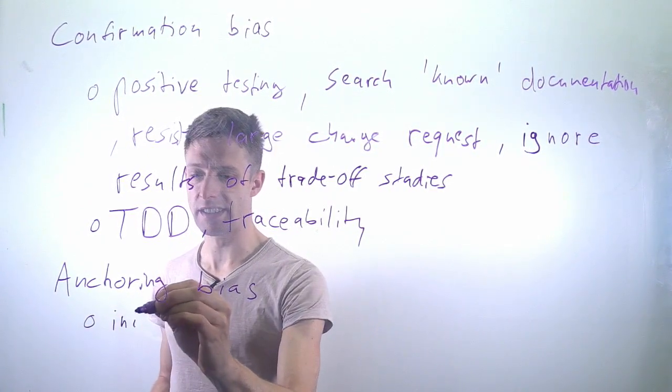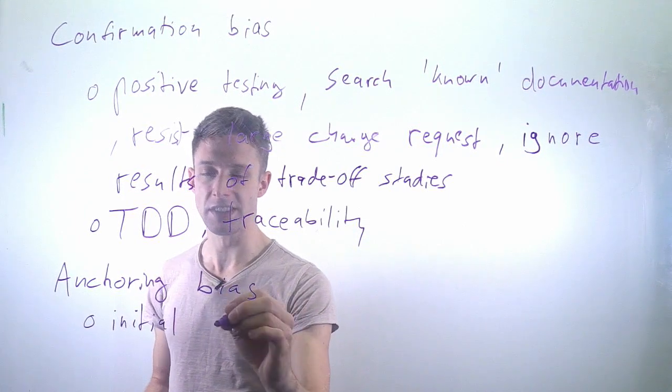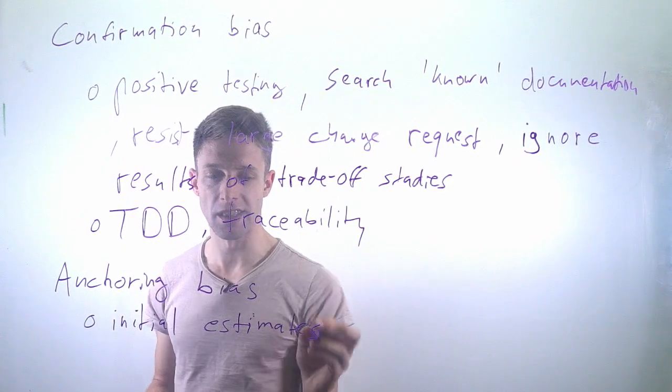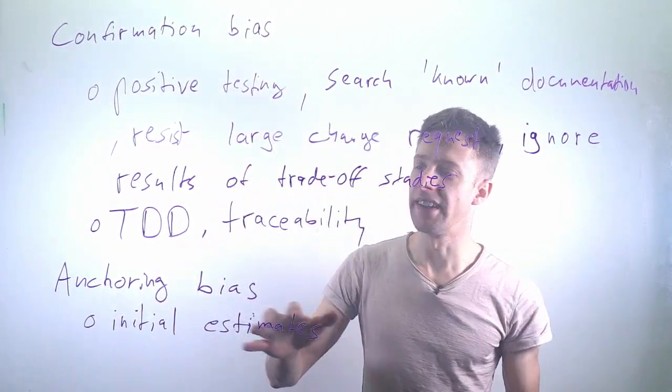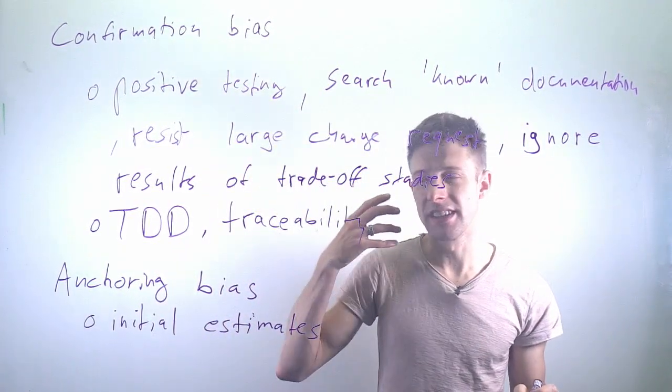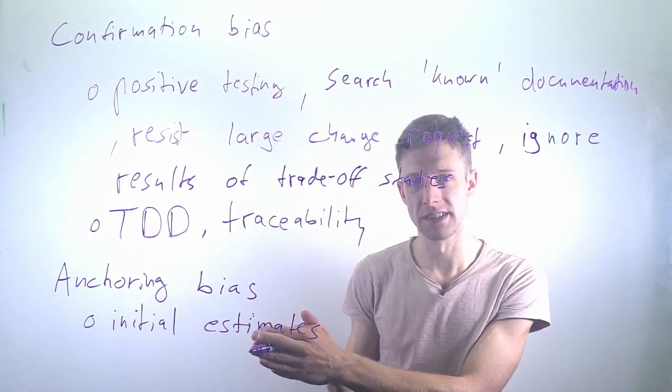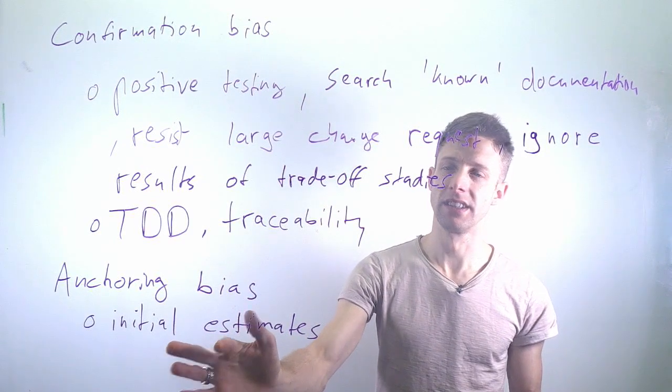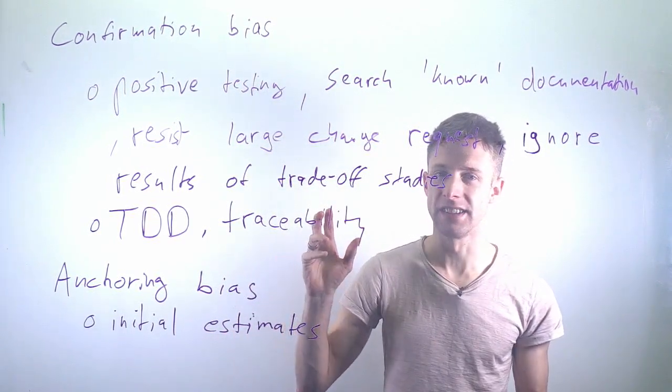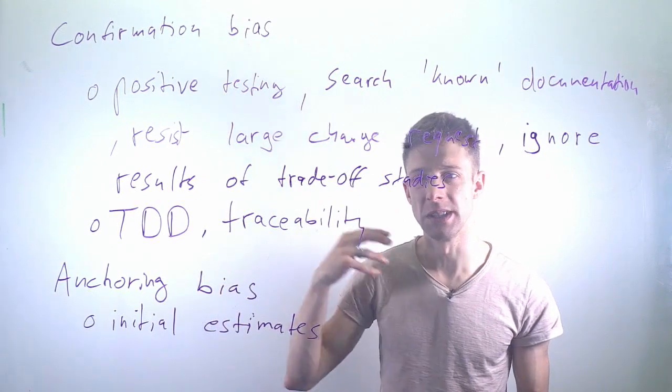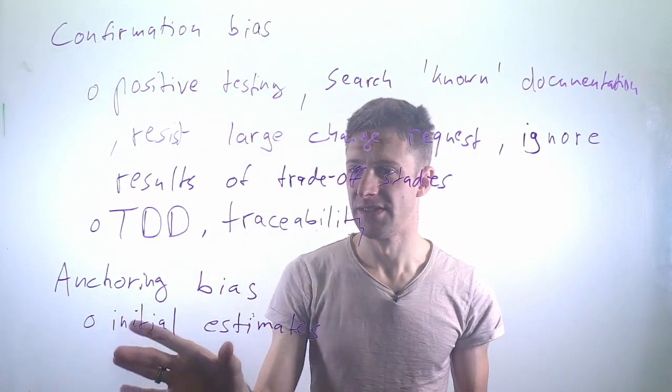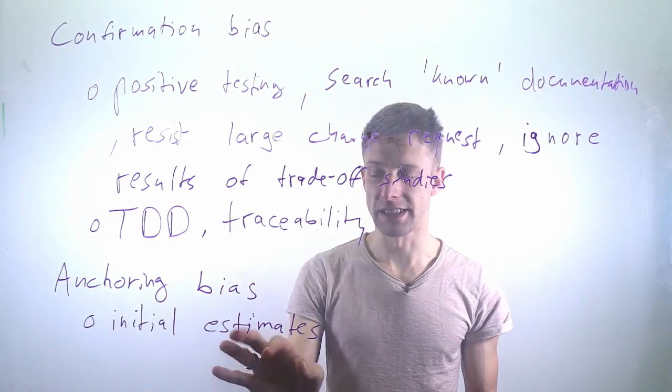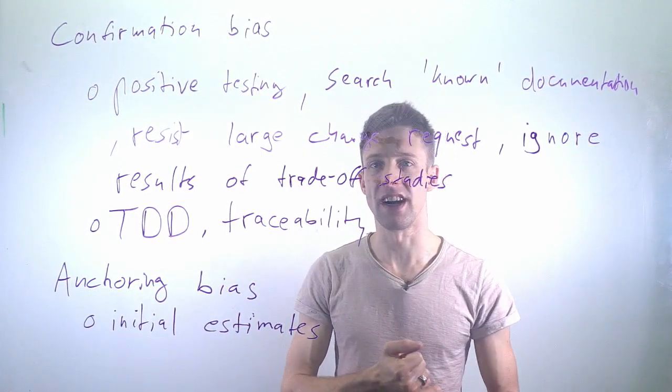In software engineering and many other projects, it's the tendency that we have our initial estimates—for example, estimating the project will take six months based on very little data. Later, when we have much better understanding of the project and could make better estimates, we have a really hard time getting away from this. Our initial six months means our estimates in the future will always be close to that.